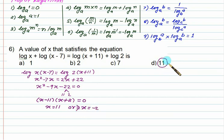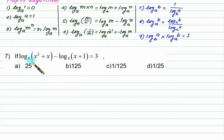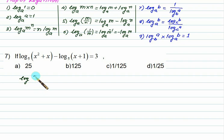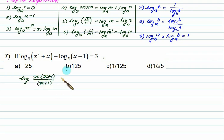In this problem both terms have base 5. Since the base is 5, we can take x as a common factor. From the first term, taking x common gives log of x(x plus 1). The second term is subtracted, so we divide by (x plus 1), giving the equation equal to 3. The (x plus 1) terms cancel.